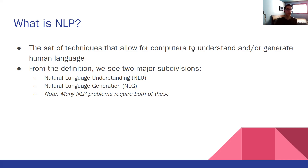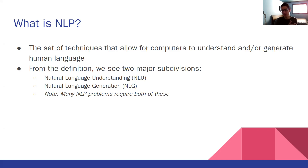Natural language generation is the one that makes all the headlines and gets all the hype — these systems capable of outputting very coherent text. GPT-3 is a good example, as is AI Dungeon. But it's important to note that a lot of NLP systems require both. You need to understand language if you're getting input from a human, and also be able to generate language if you're having a conversation with them. So things like Siri, Alexa, and Google Assistant need to have both NLU and NLG capabilities.